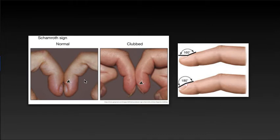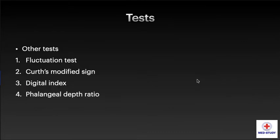The first image shows the Schamroth sign where we can see the obliterated diamond-shaped window. The second figure is the Lovibond test where we can see an angle of more than 180 degrees as seen in clubbing. Other tests include the fluctuation test, curved sign, modified sign, digital index, phalangeal depth ratio, etc.